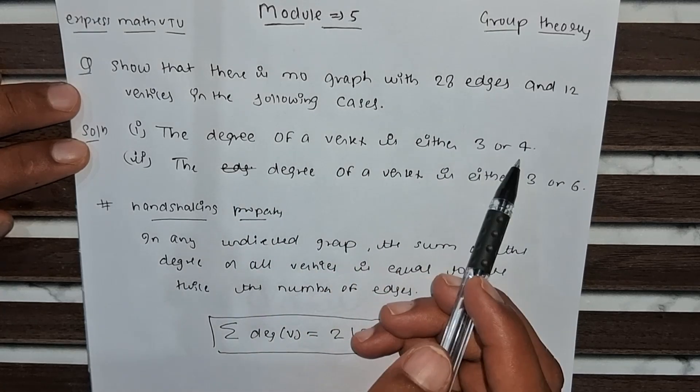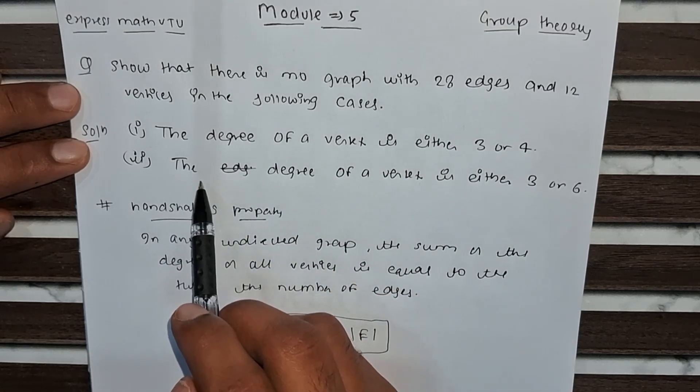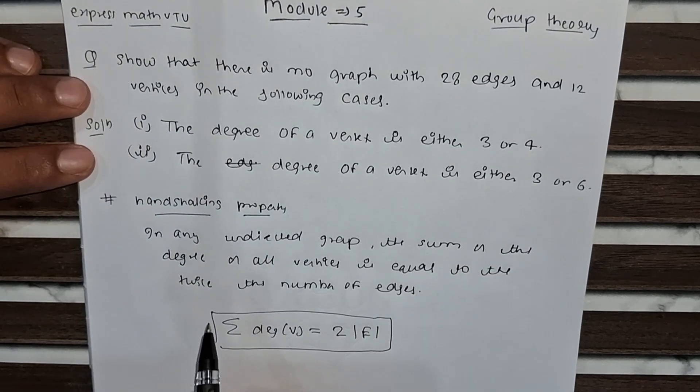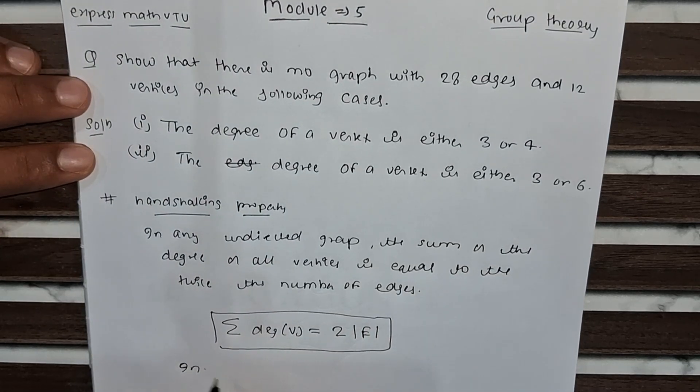What they are asking? They are asking about the degree of vertices is either 3 or 4. In the second part, the degree of vertices is either 3 or 6.